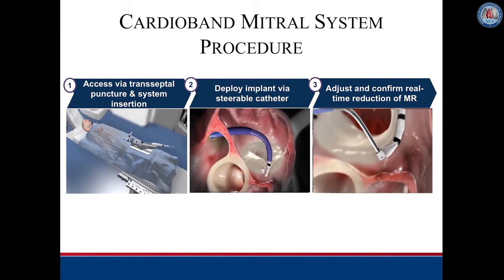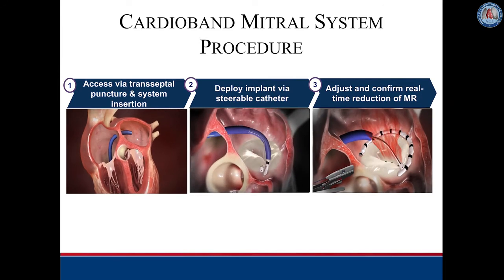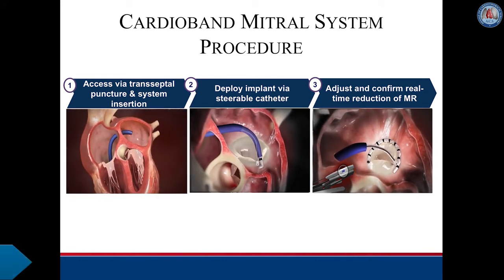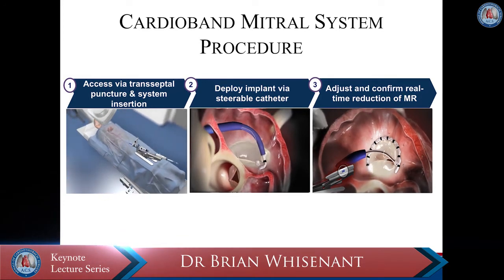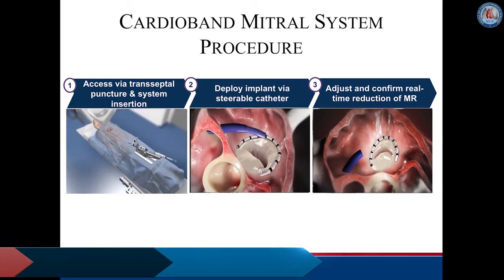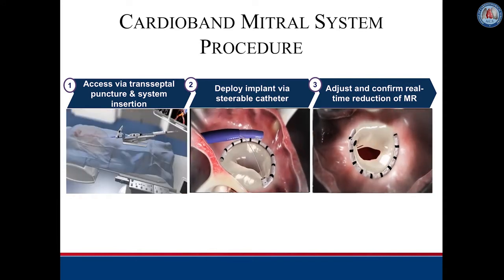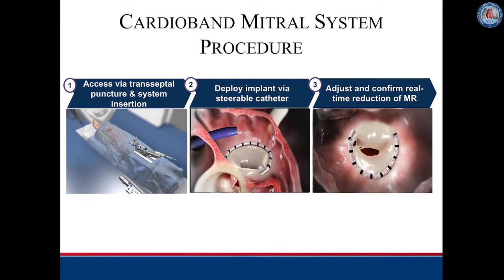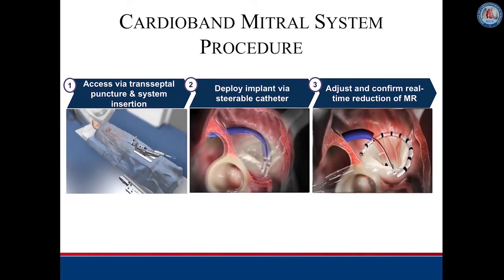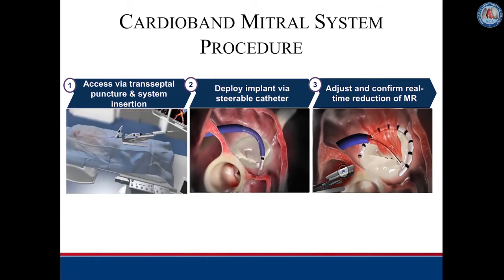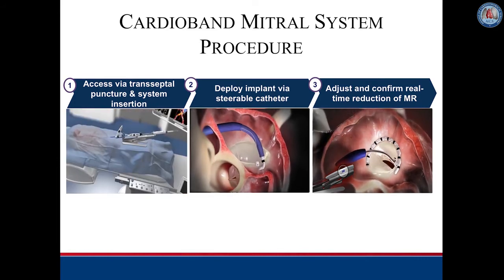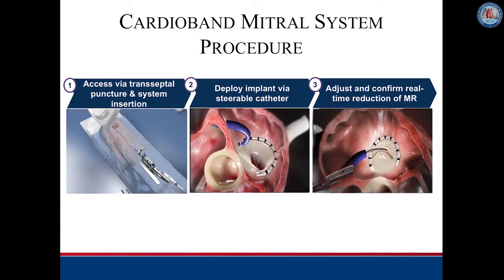These three animations demonstrate the Cardioband procedure. The procedure is performed via the femoral vein and transseptal access to the left atrium under 3D transesophageal echo guidance. The catheter is then steered to the anterolateral trigone where two anchors are passed through the Cardioband into the fibrous tissue, anchoring the distal end of the band. Transesophageal echo is used to identify the hinge point of the annulus. The Cardioband and catheter delivery system are then navigated posteriorly around the annulus until the medial trigone is reached, where final anchors are positioned.